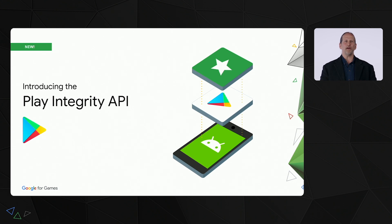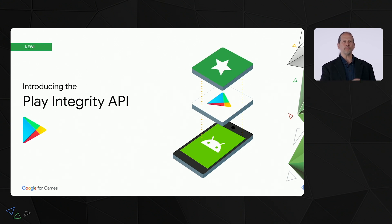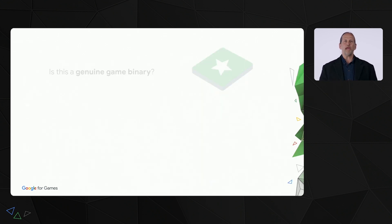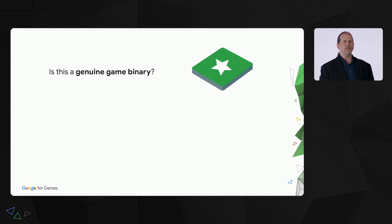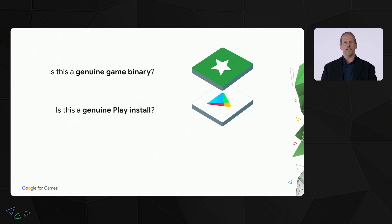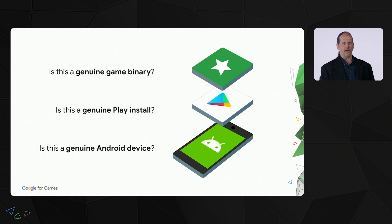So we've unified our most advanced technologies so that you can protect the integrity of your games by calling a single API, helping you to detect risky and untrustworthy game interactions. The API helps you answer three questions: Is this a genuine binary? Is this a genuine Play install? Is this a genuine Android device?